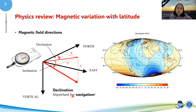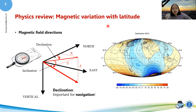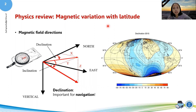Declination is important for navigation. Both declination and inclination are renewed every five years. This is the 2015 version, and there is now a new release for 2020 — so it goes 2015, 2020, 2025, and so on.